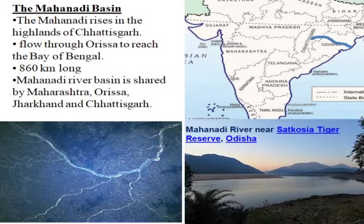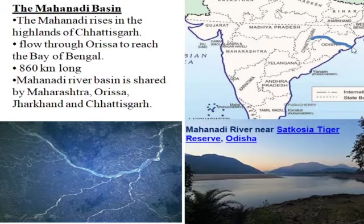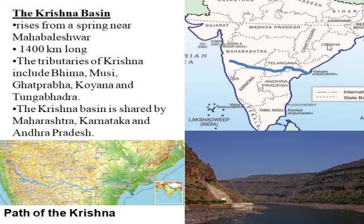Mahanadi originates from the Dandakaranya hills — this forest is mentioned in the Mahabharata. It originates from the highlands of Chhattisgarh, flows through Odisha to reach the Bay of Bengal, and is 860 km long. The Mahanadi river basin is shared by Maharashtra, Odisha, Jharkhand, and Chhattisgarh. The famous project on it is Hirakud Dam in Odisha.